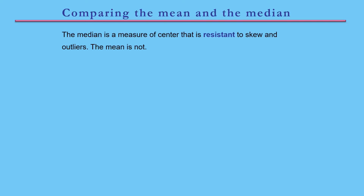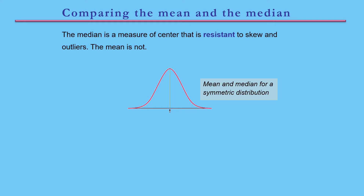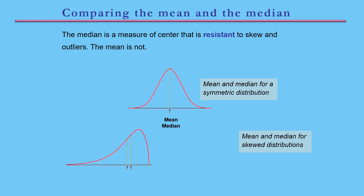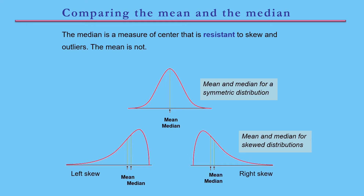Comparing mean and median: the median is a measure of center that is resistant to skew and outliers, but the mean is not. If the distribution is symmetric, the mean and median coincide at the center — for example, with values 1, 2, 3, 4, 5, both the mean and median equal 3. If the distribution is left-skewed, the mean is pulled toward the outlier on the left, so the mean will be less than the median. If it is right-skewed, the mean is pulled to the right, so the mean will be greater than the median.